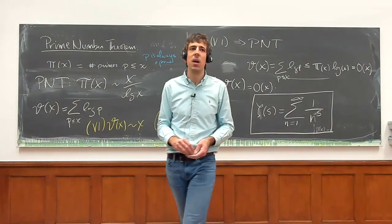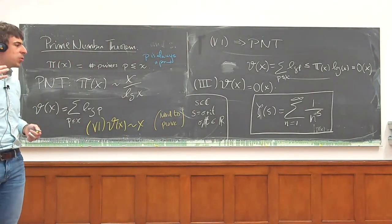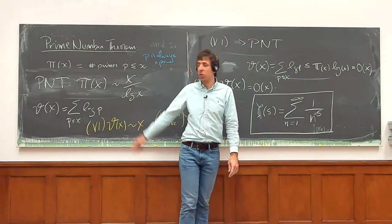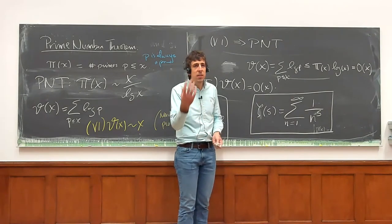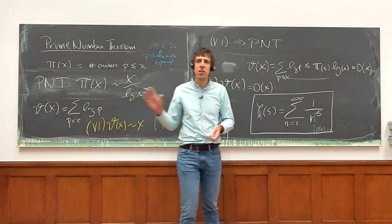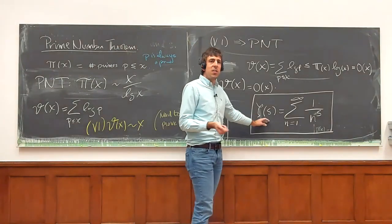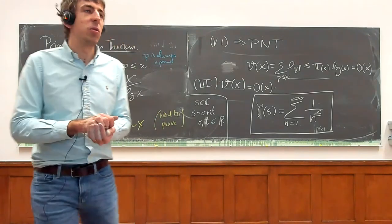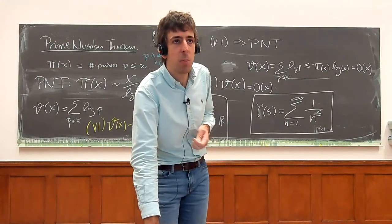I will try to convey why this function has anything to do with counting primes, what the Riemann hypothesis is, and what it would give us about such a function. This is the plan for the next three lectures. Today you saw no complex analysis except for the zeta function, which I defined on at least part of the complex plane. But you will see some complex analysis in what's to come. I just wanted to set up the objects so that we don't have to do this next time. Thanks so much, and I'm happy to stick around if there are any questions.